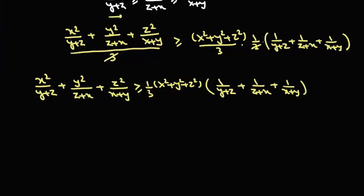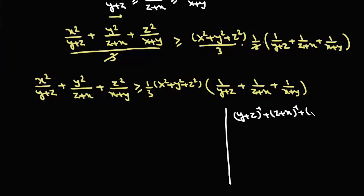Now we are going to use the power mean AM formula. We consider three numbers: y plus z to the power minus 1, plus z plus x to the power minus 1, plus x plus y to the power minus 1, divided by 3, which is greater than or equal to...